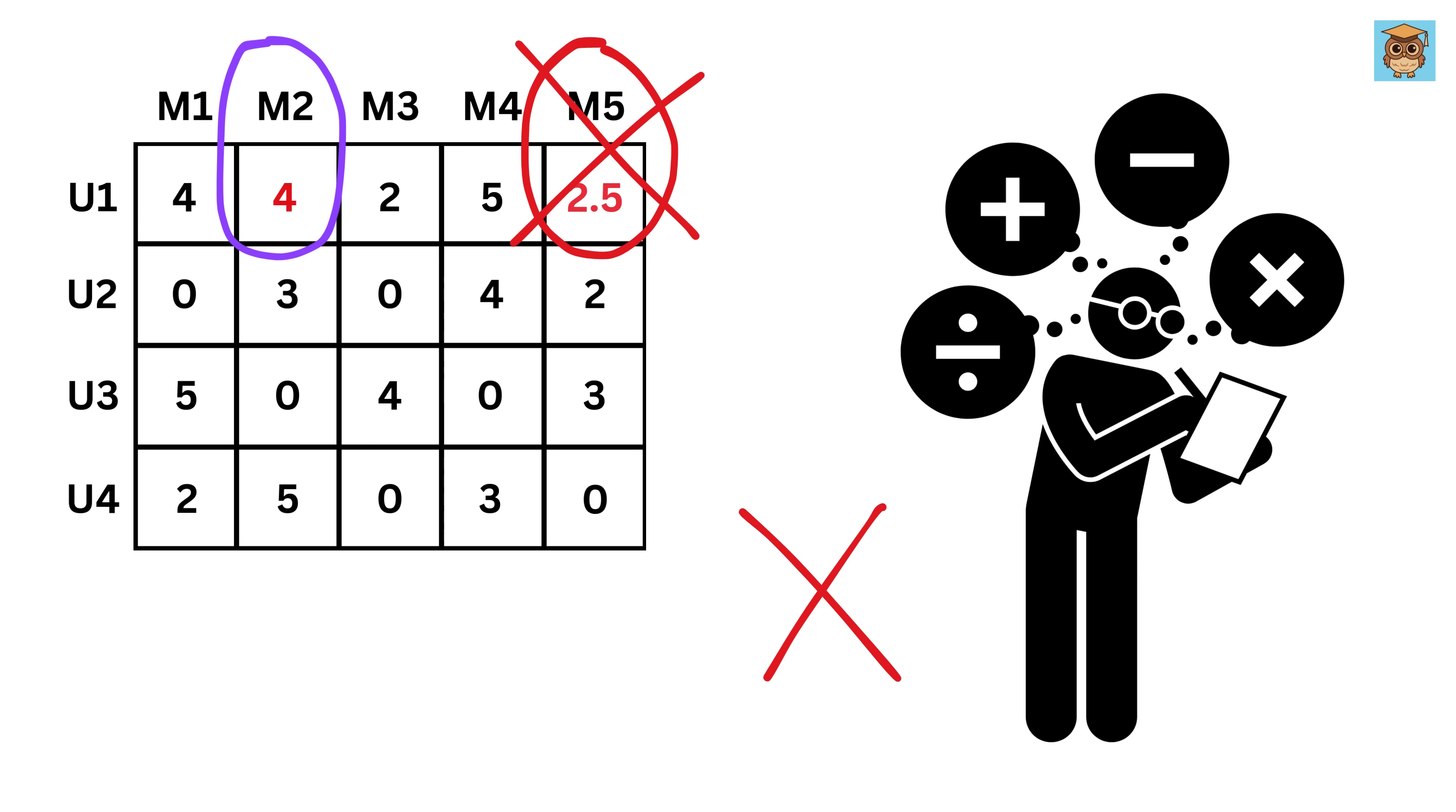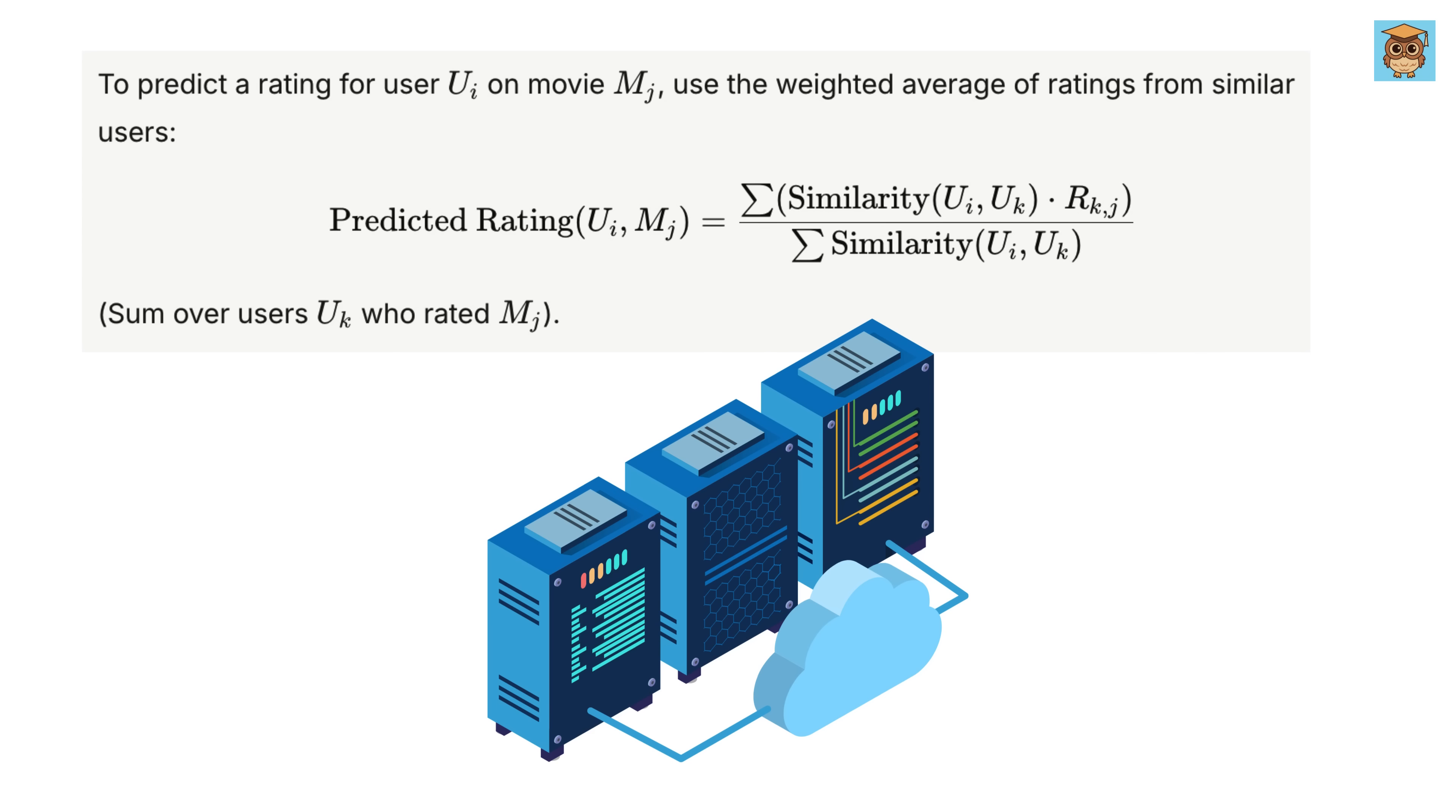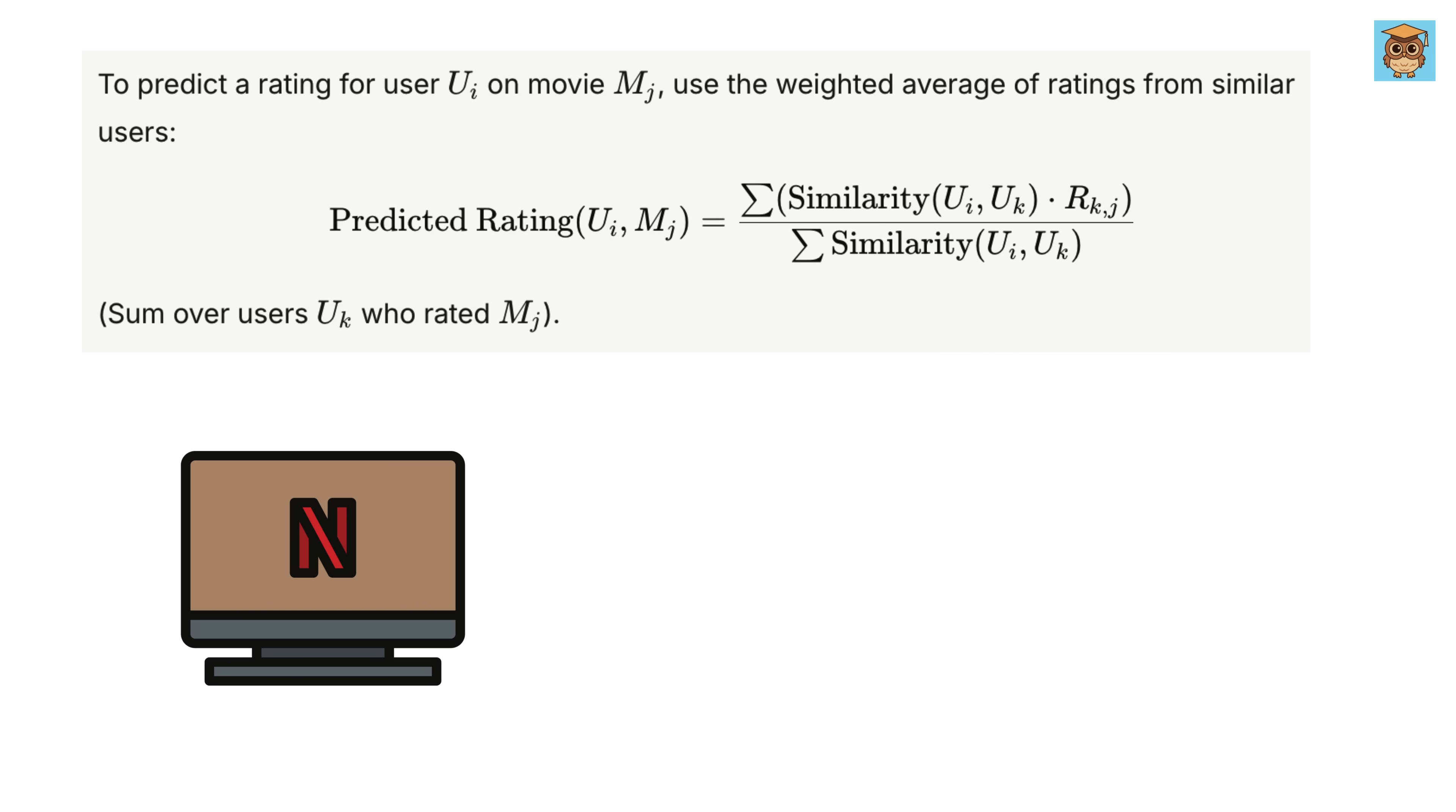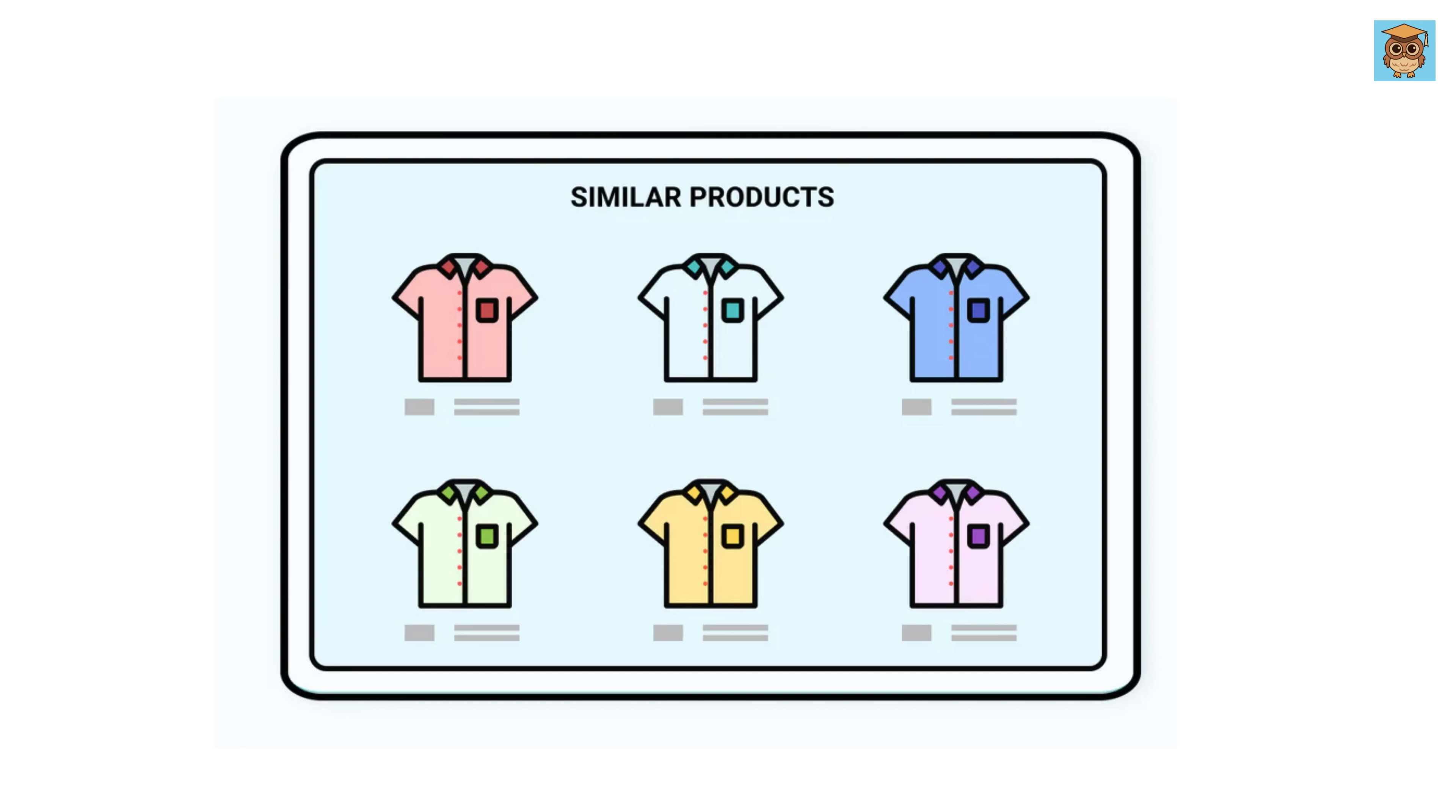By the way, in reality we do not compute this value one by one using hand. Instead, we use a formula that involves computing everything using matrices because it's much faster and efficient, especially when we have millions of users and items. This is how platforms like Netflix, Amazon, and Spotify handle huge amounts of data behind the scenes to recommend movies, products, or songs you might like using matrices.